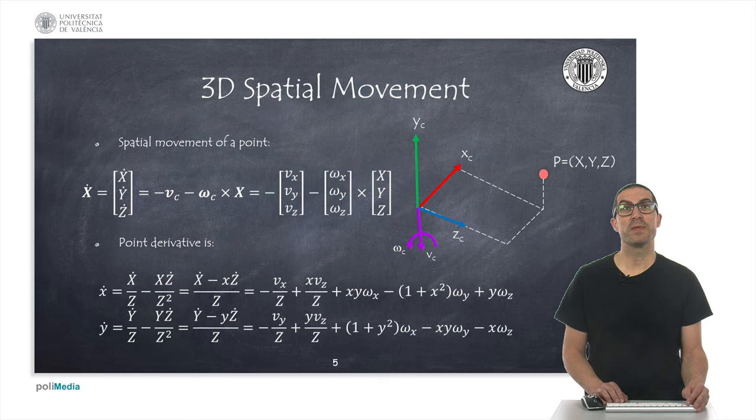Now, if the camera's reference frame moves with a linear velocity v_z and angular velocity omega_z, then the coordinates of point p with respect to the camera frame acquire velocity. The expression I show here is a well-known expression in 3D spatial movement.